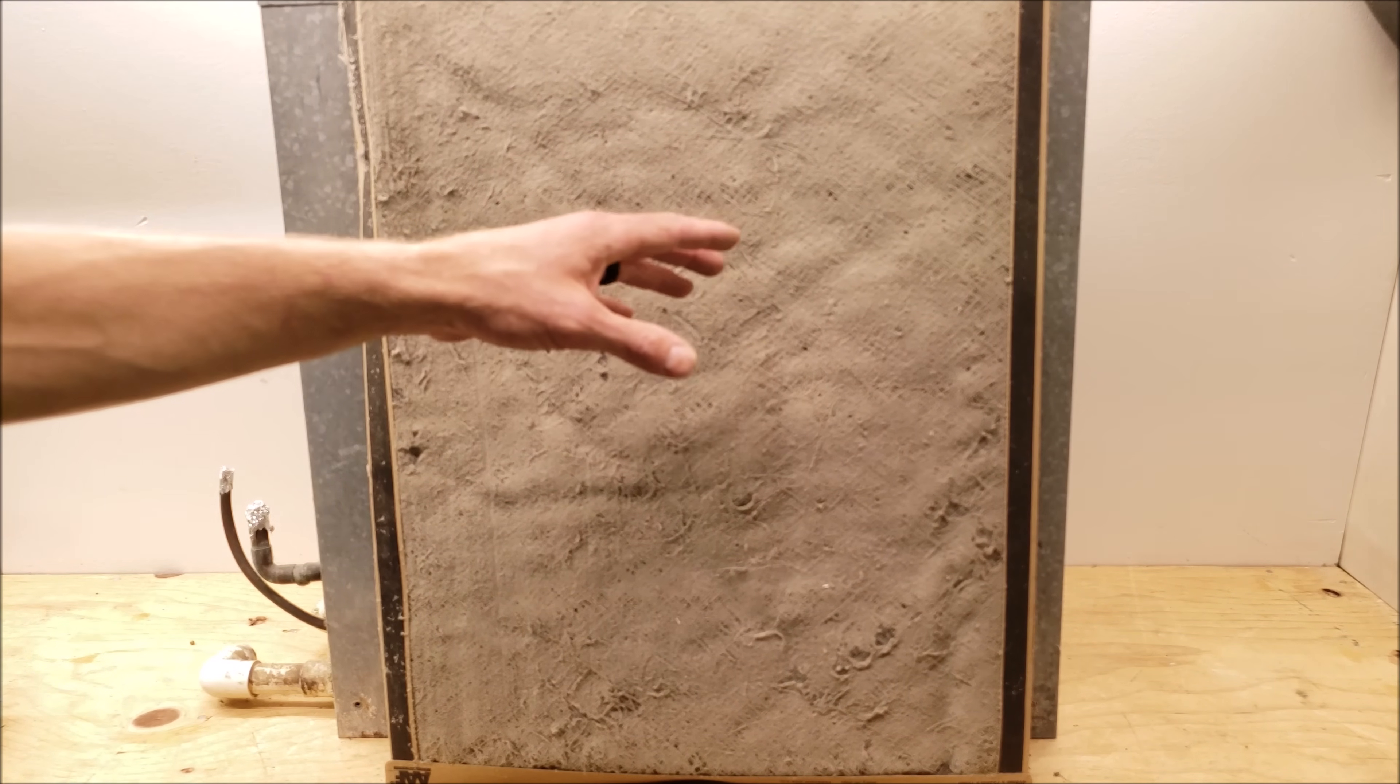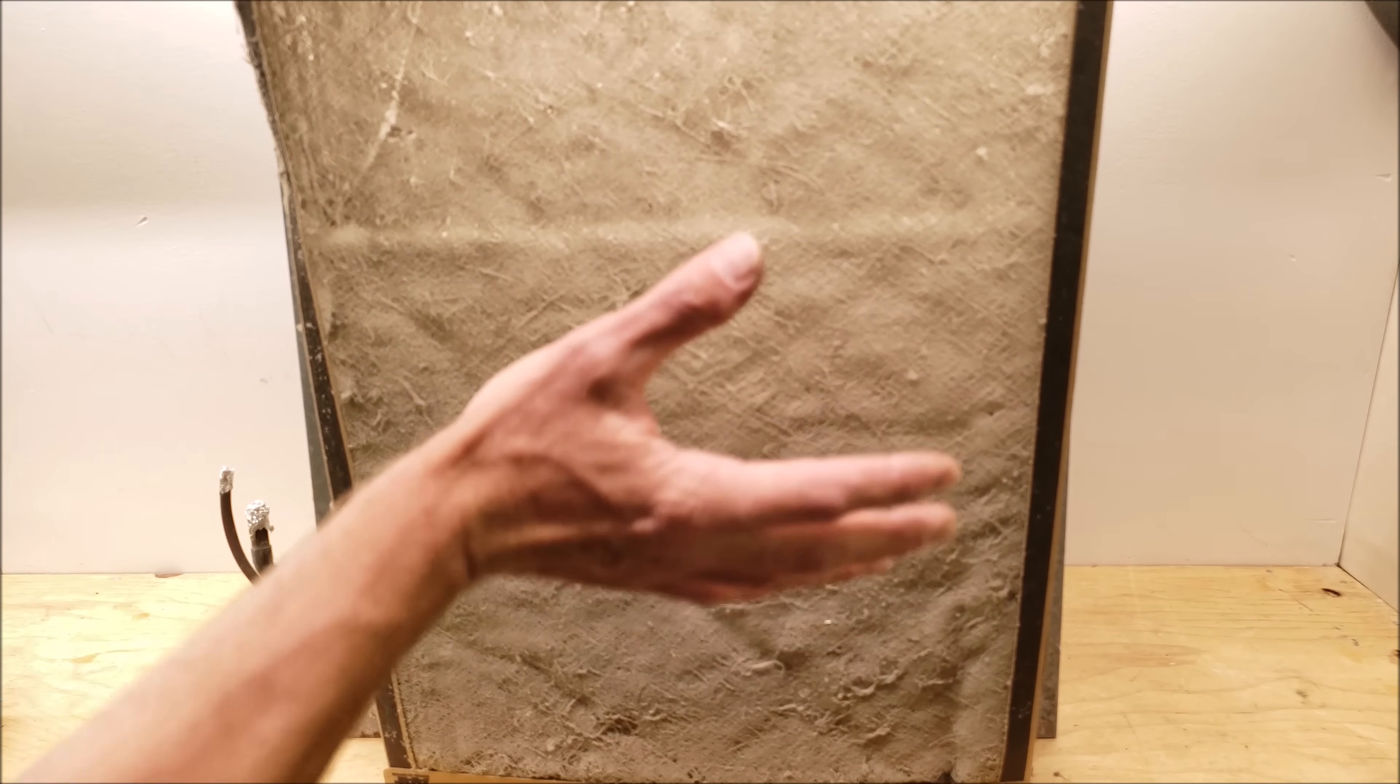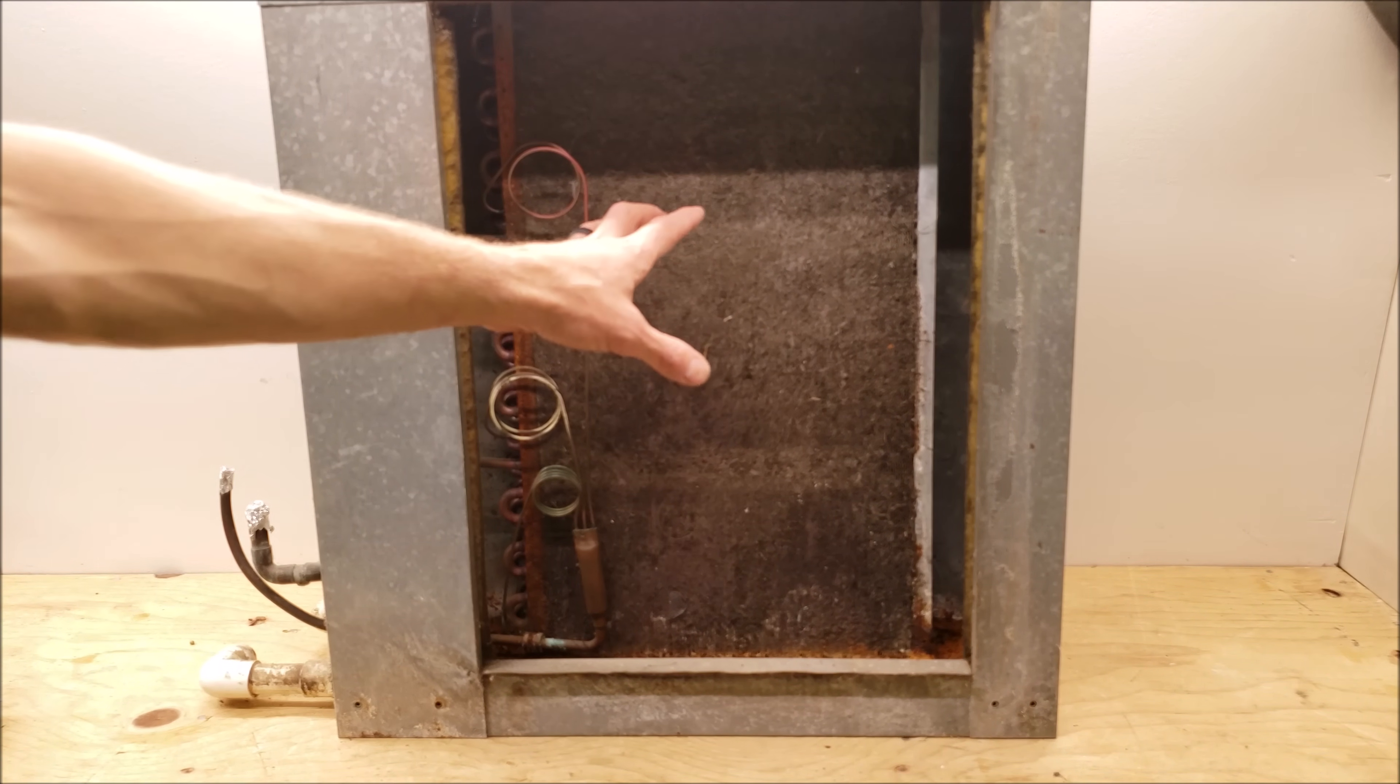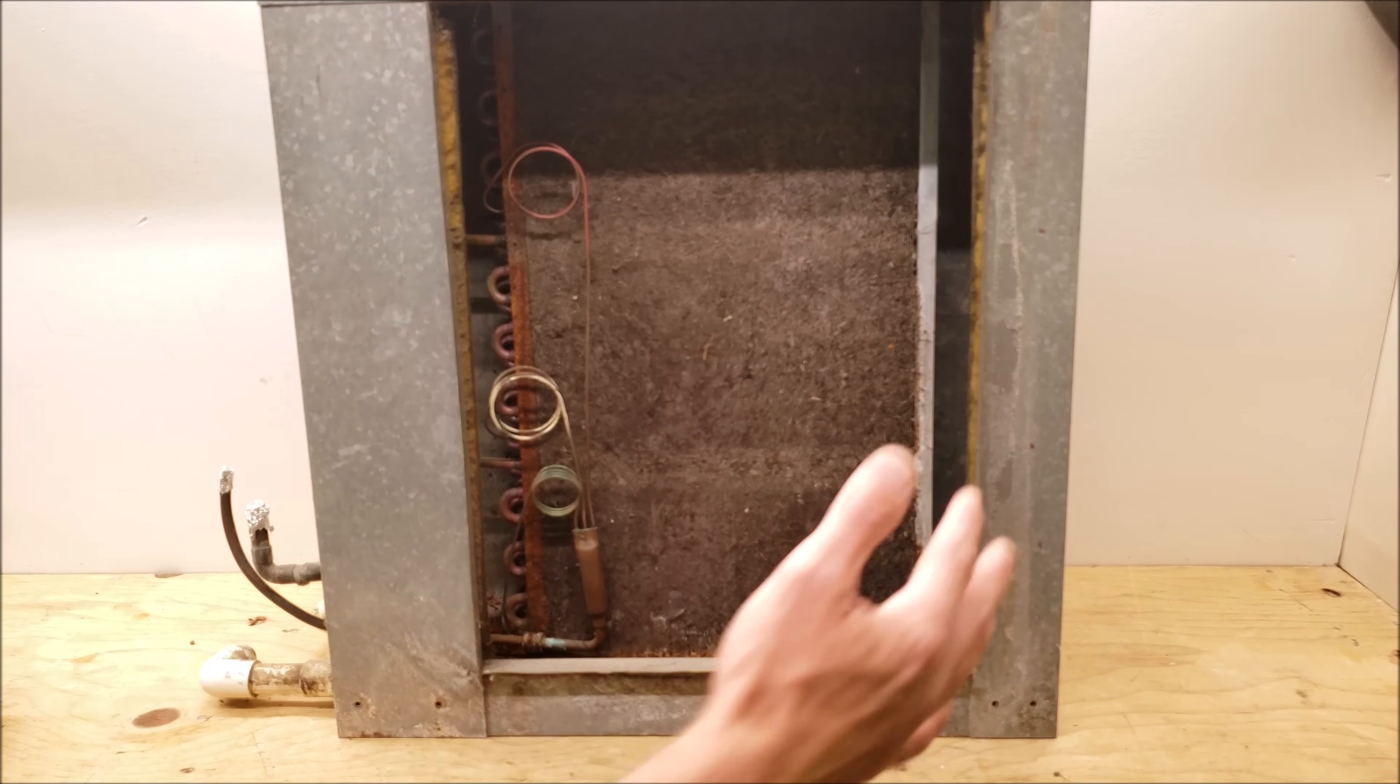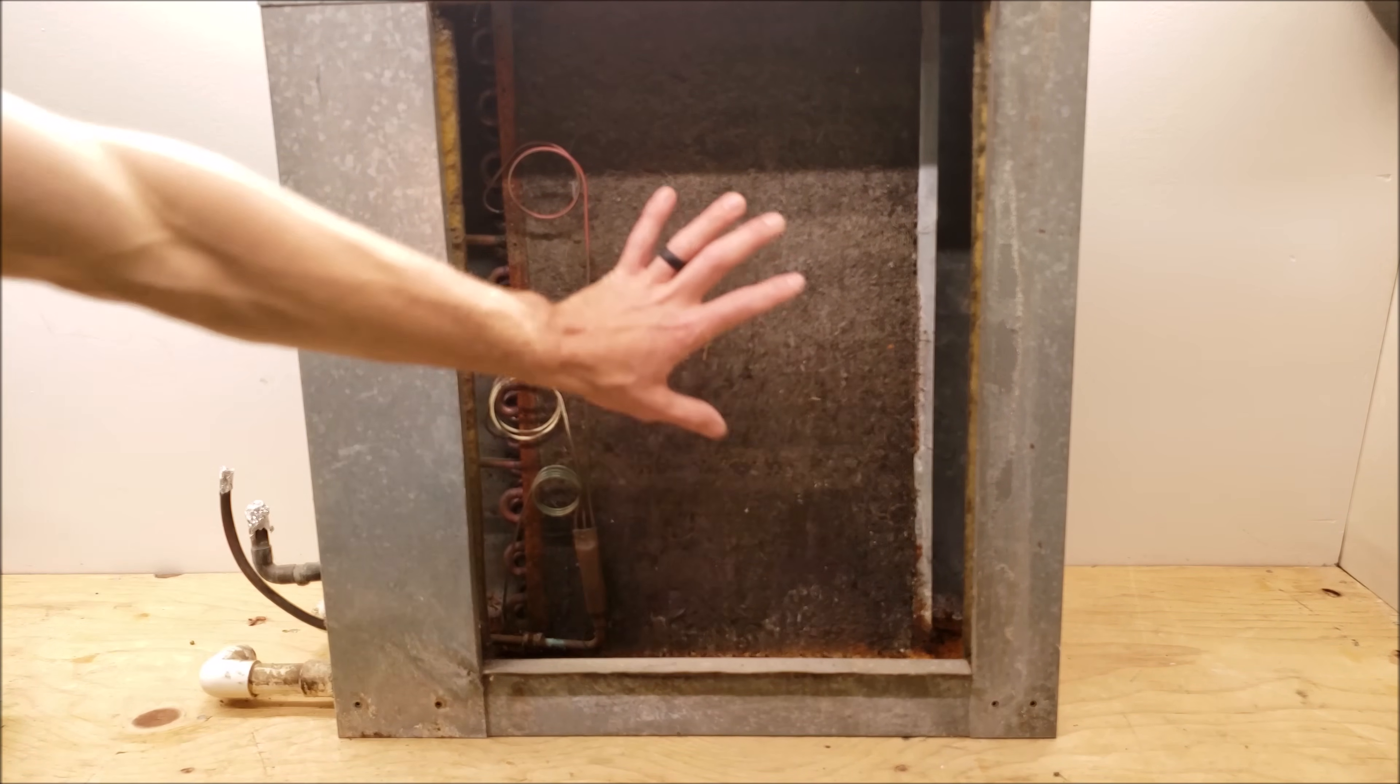Now this filter right here was in an area where it just got sucked up. It wasn't in a track. It wasn't locked in place. Basically, once this clogged, the airflow just pushed it up and went around this. So when the airflow went around this, it ended up putting dust on that coil. Now this isn't that particular coil from that filter, but this is another example that when dust can get around the filter, it's going to accumulate on the wet coil. And if you have no filter there whatsoever, then this is what's going to happen.